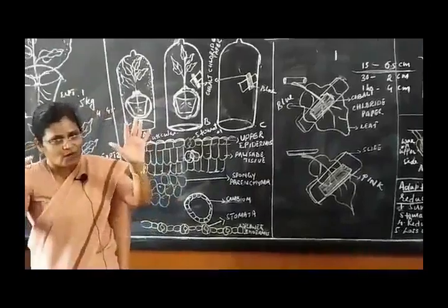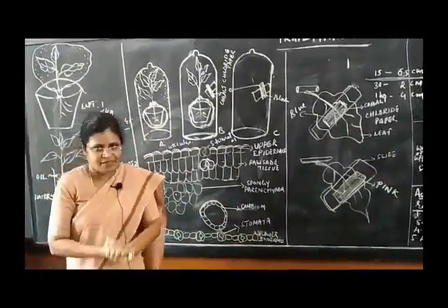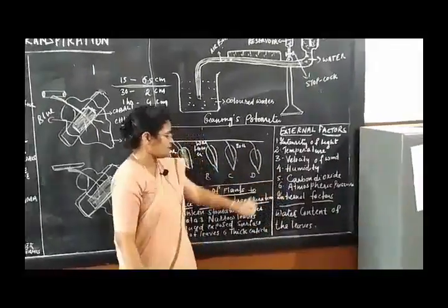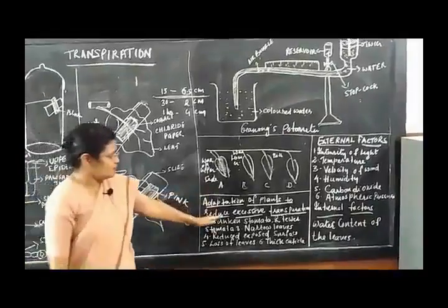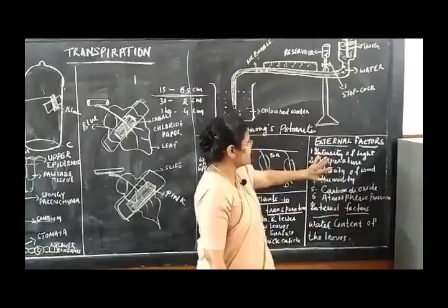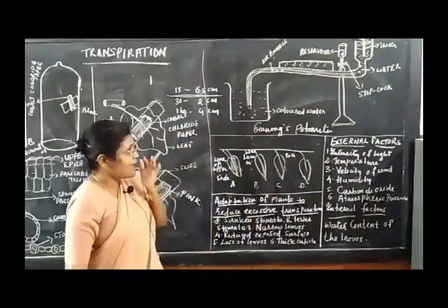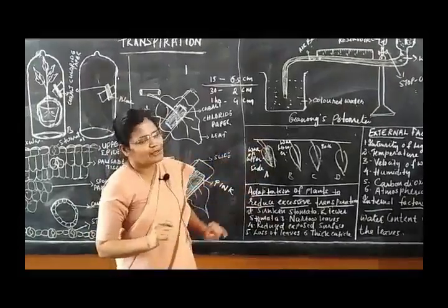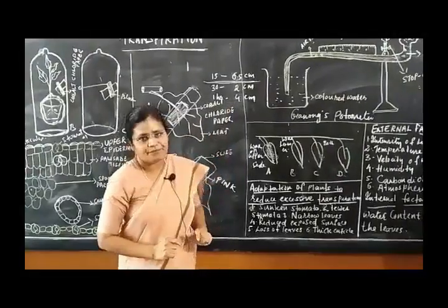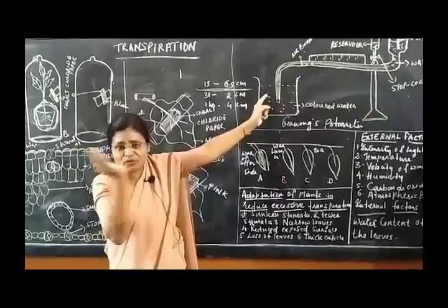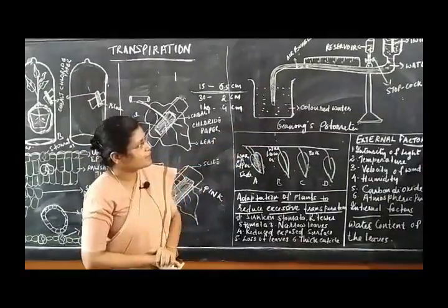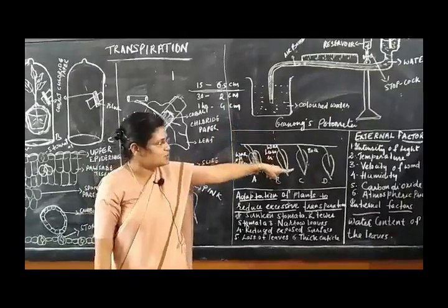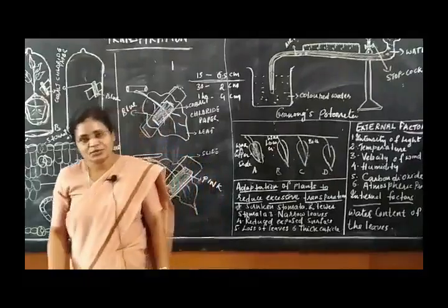To conclude the chapter: we covered what is transpiration, various experiments proving transpiration occurs from the aerial part, external and internal factors affecting transpiration, plant adaptations to reduce excessive transpiration, and the Ganong's potometer used to measure transpiration under different external factors. Limitations of the Ganong's potometer include difficulty in introducing the air bubble and the use of a twig rather than a whole plant, which may dry faster. Thank you and have a nice day.